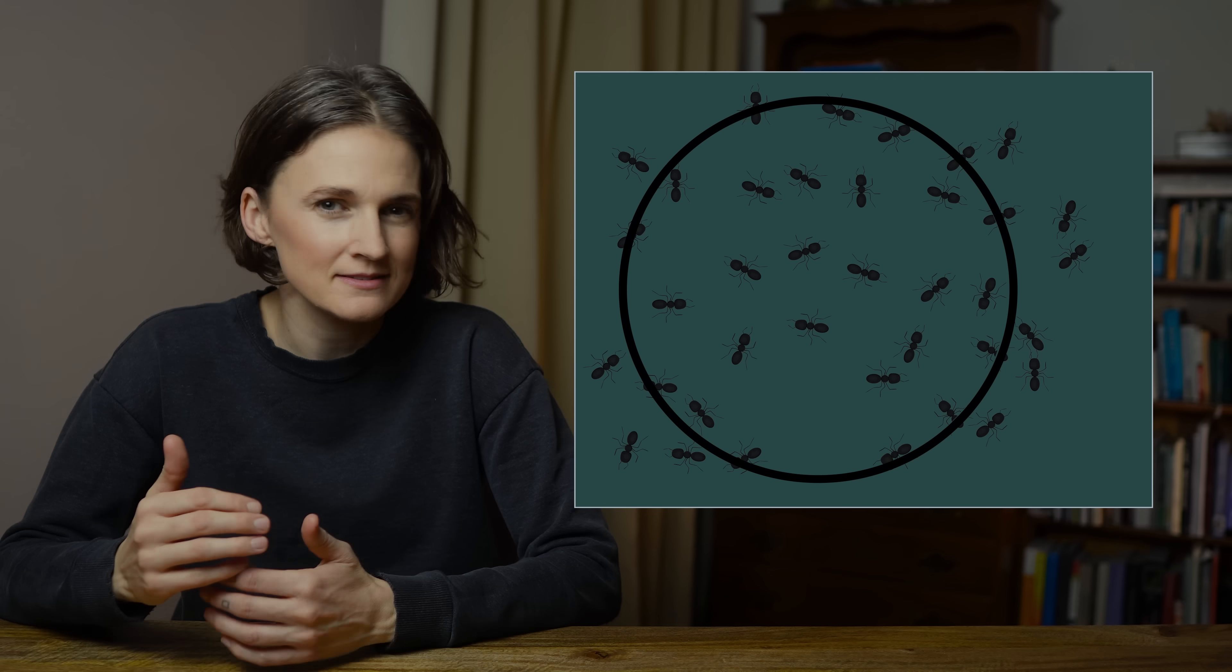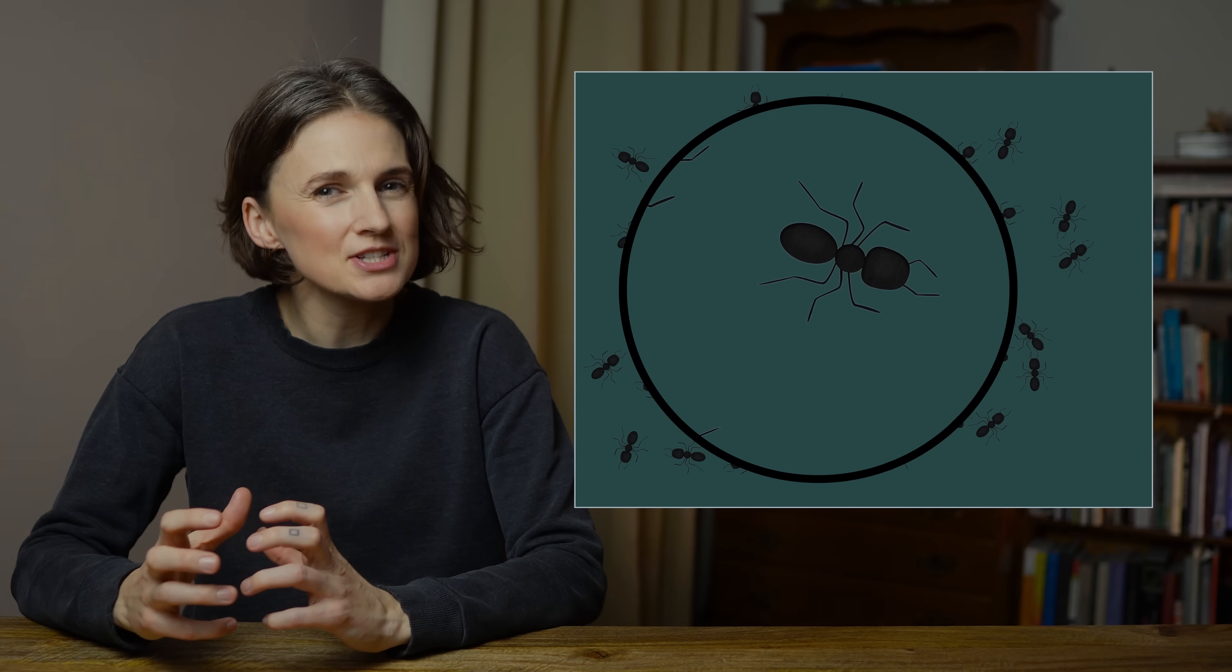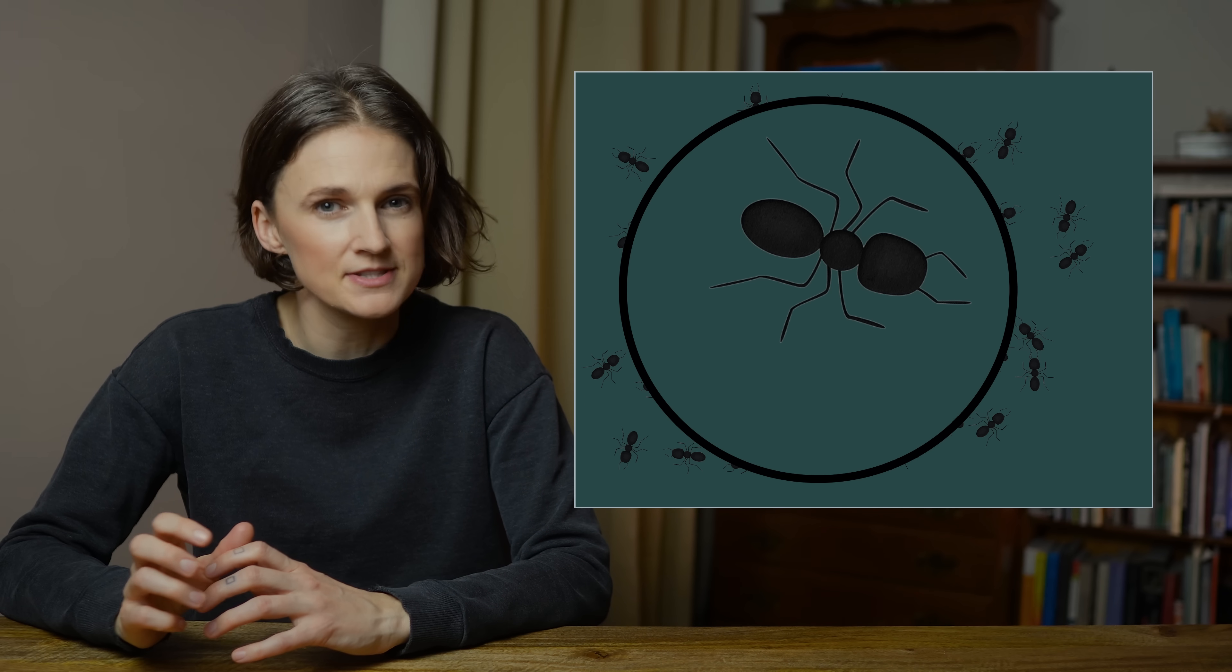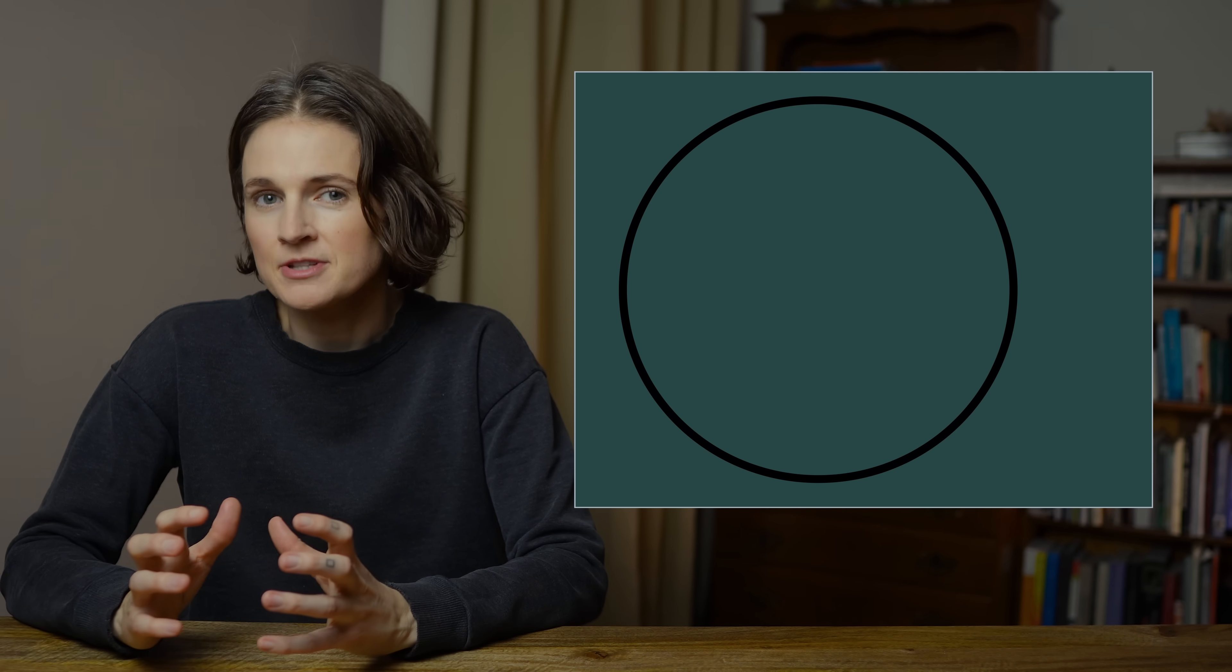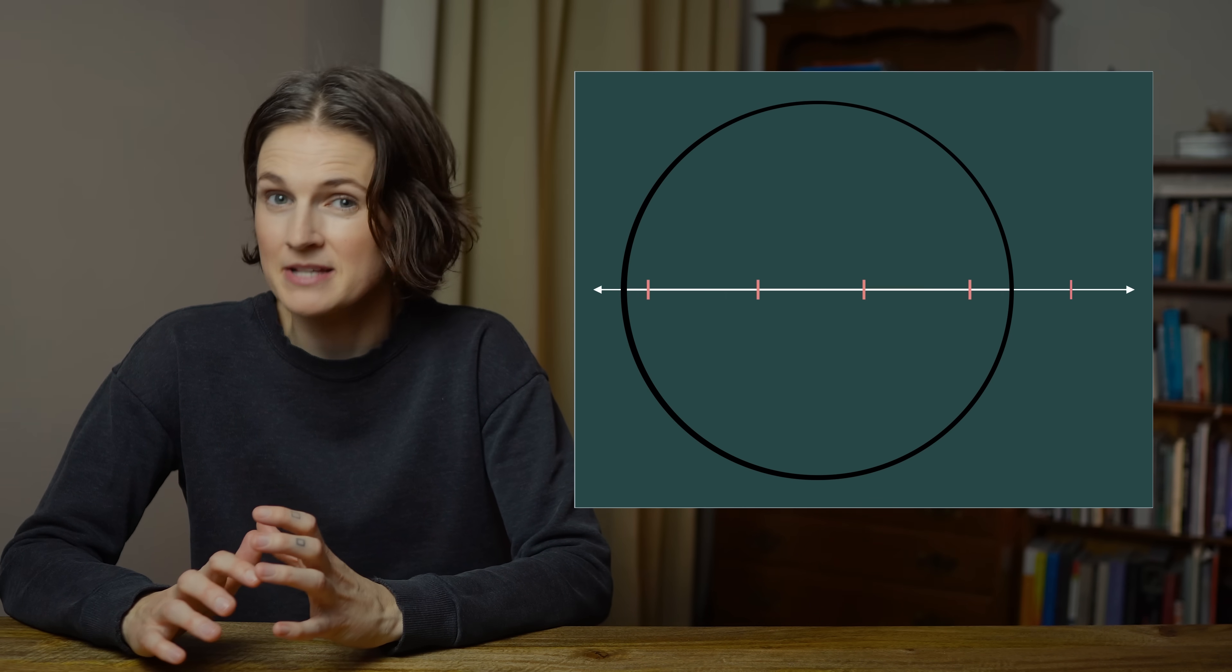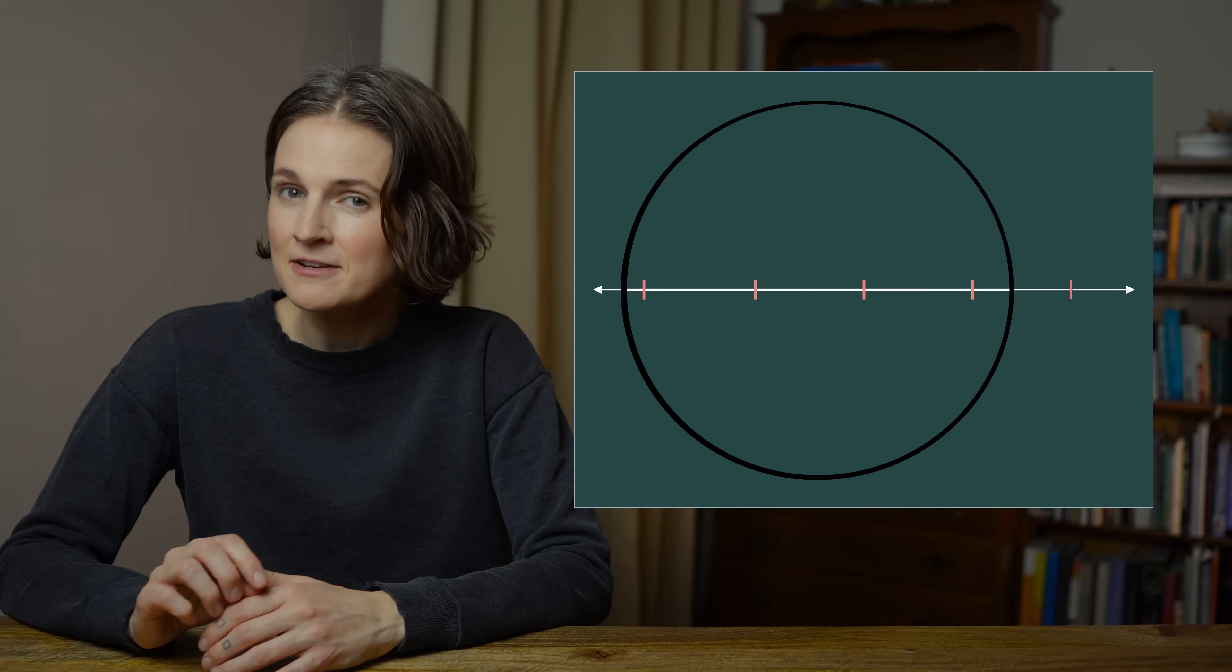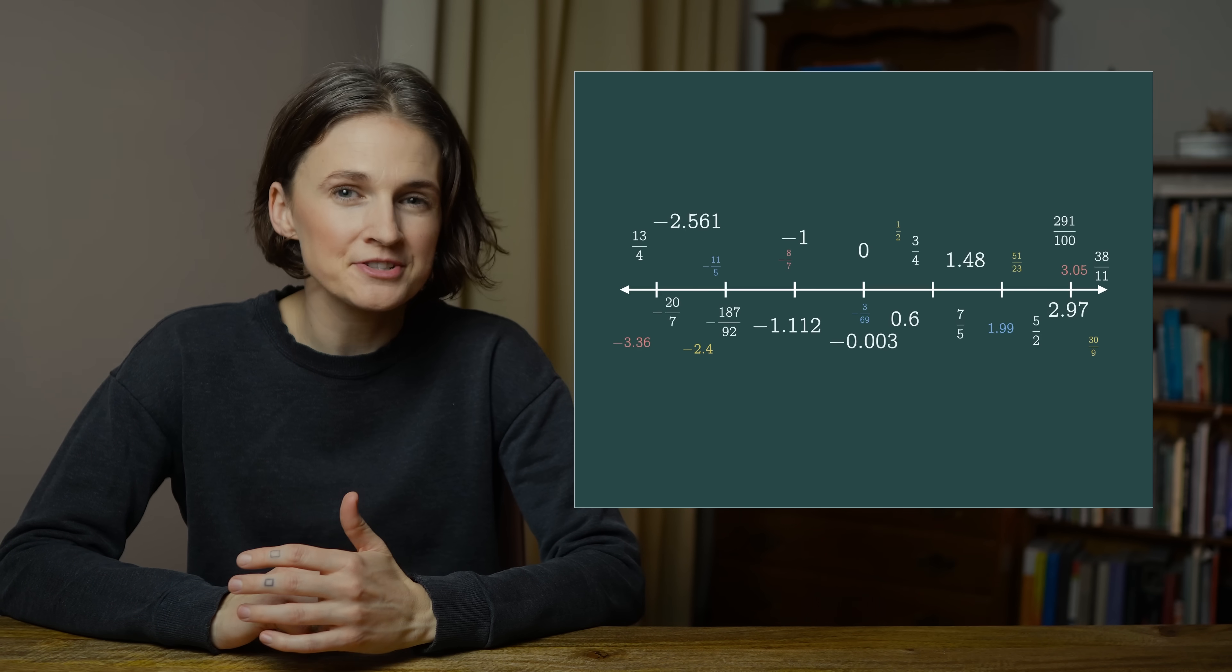When you imagine zooming in, like with a microscope, you might have this intuition that eventually you're seeing things on the level of units. Eventually, at a close enough scale, there's just one ant in the frame. But when you're looking at the rational numbers within the reals, that's impossible. At every scale, no matter how close, there are infinitely many rational numbers. In that sense, the rational numbers are everywhere.